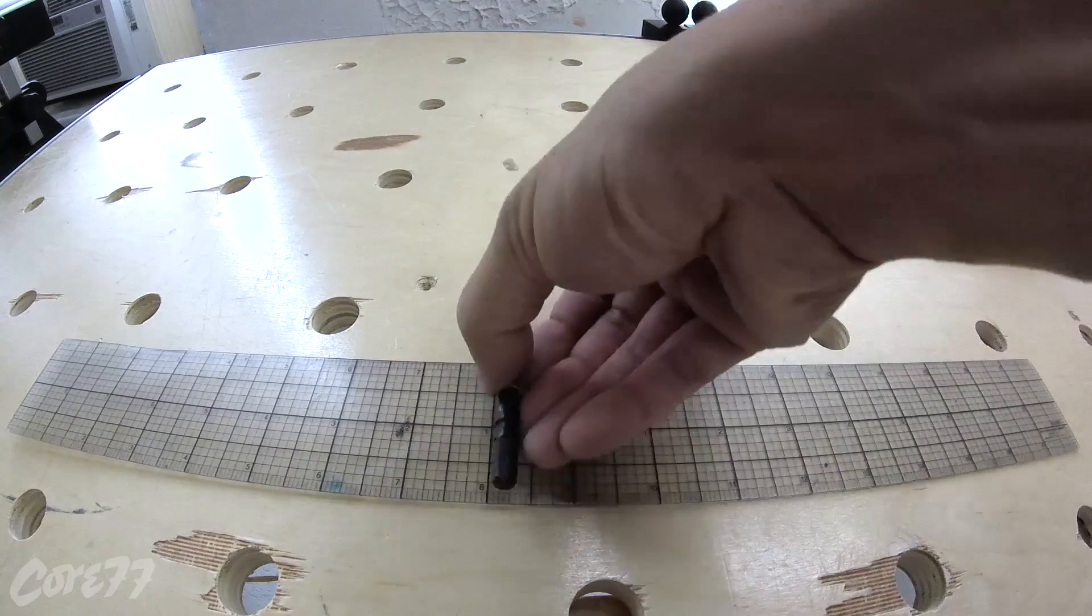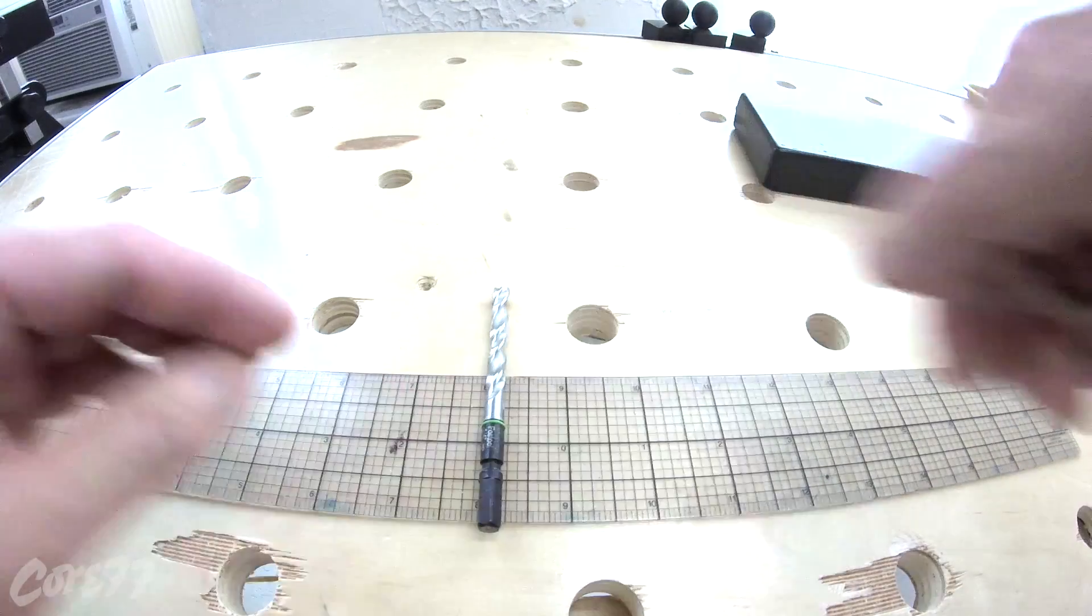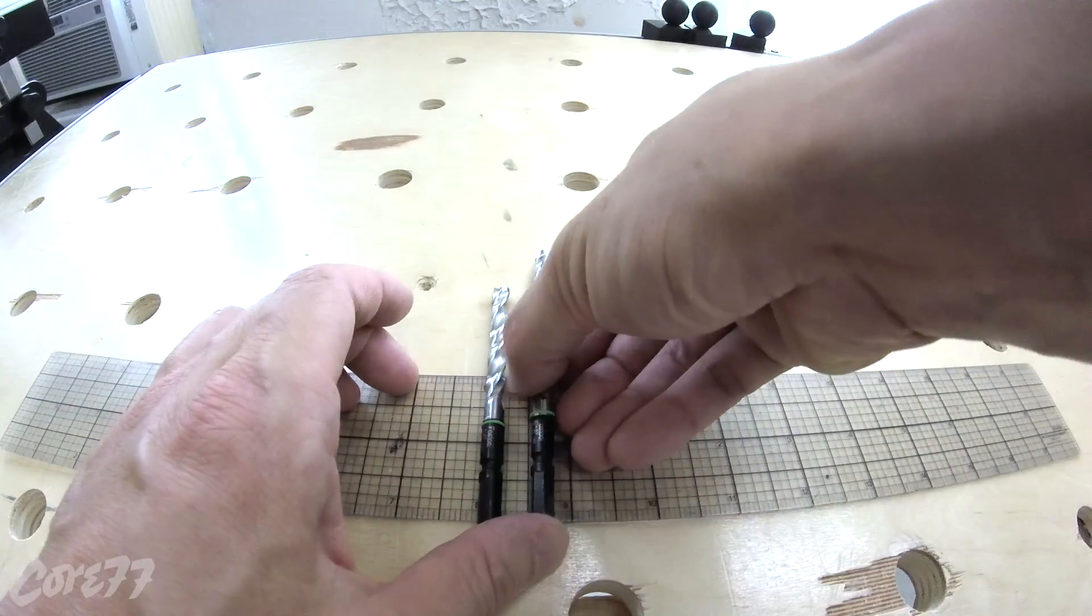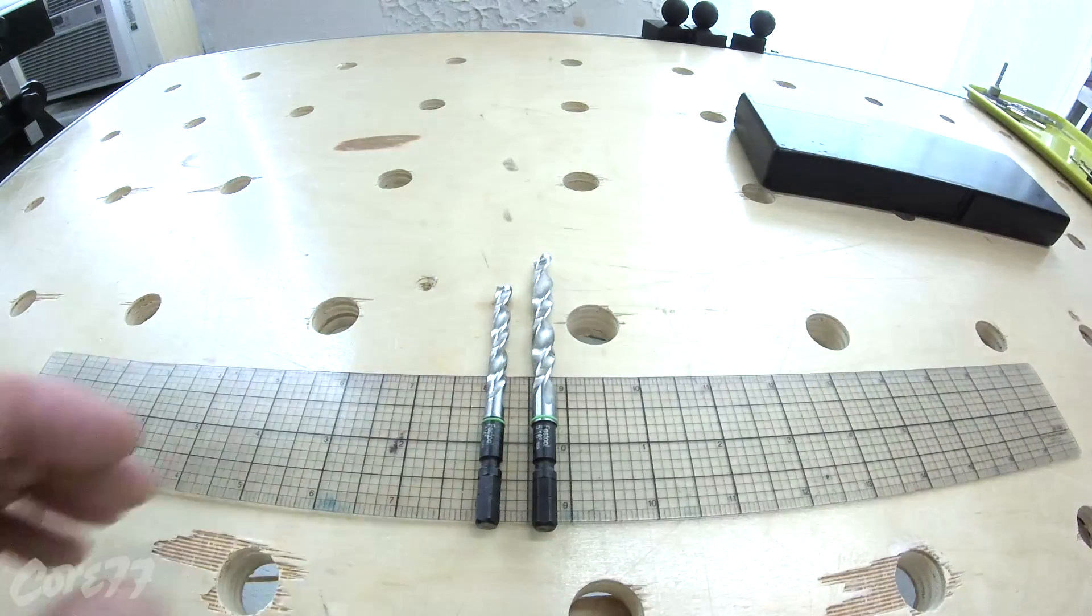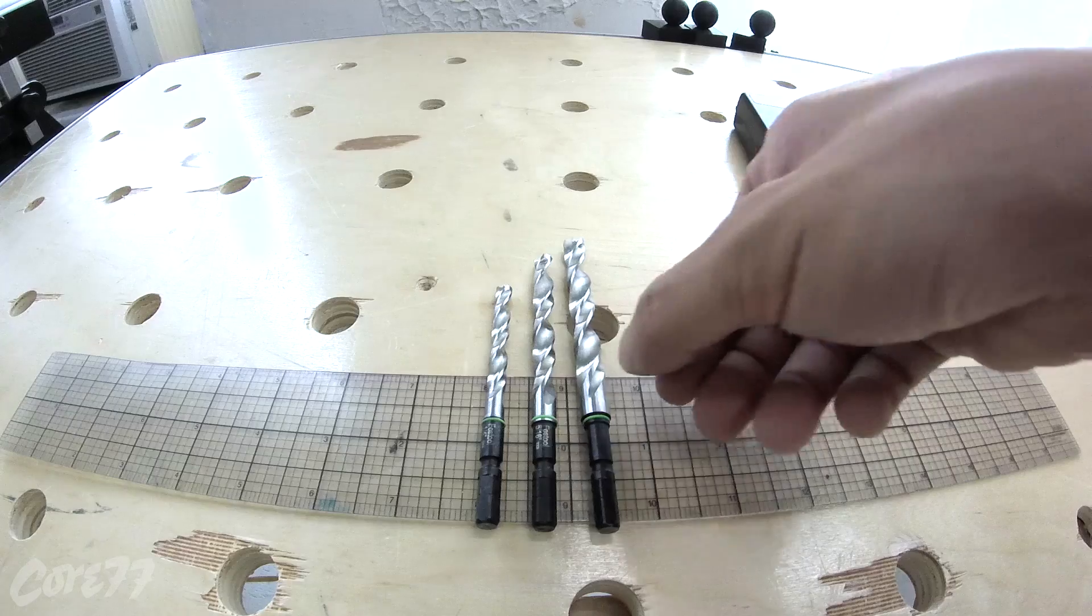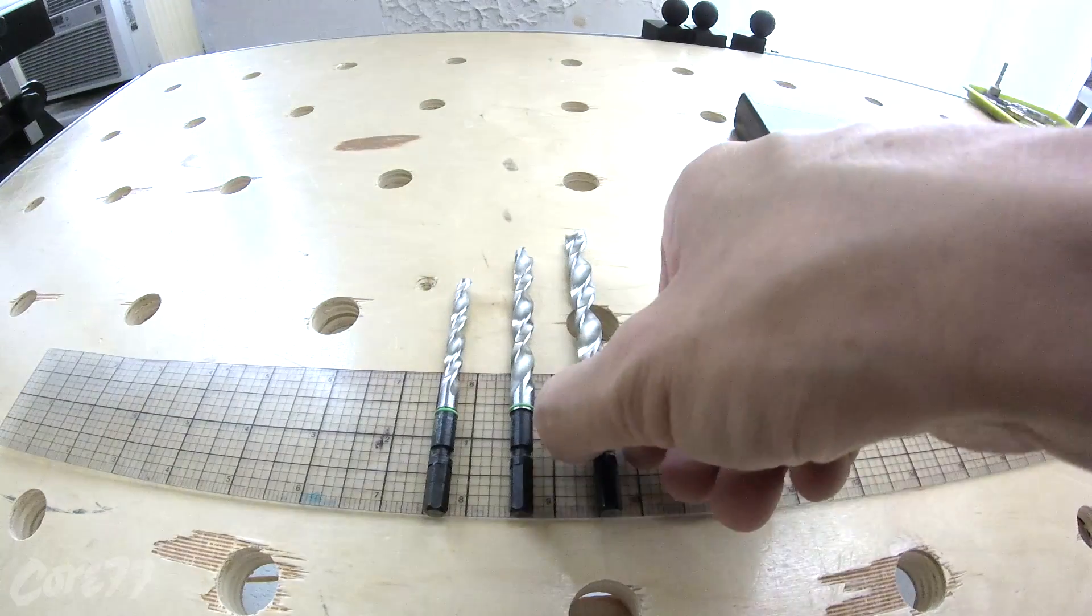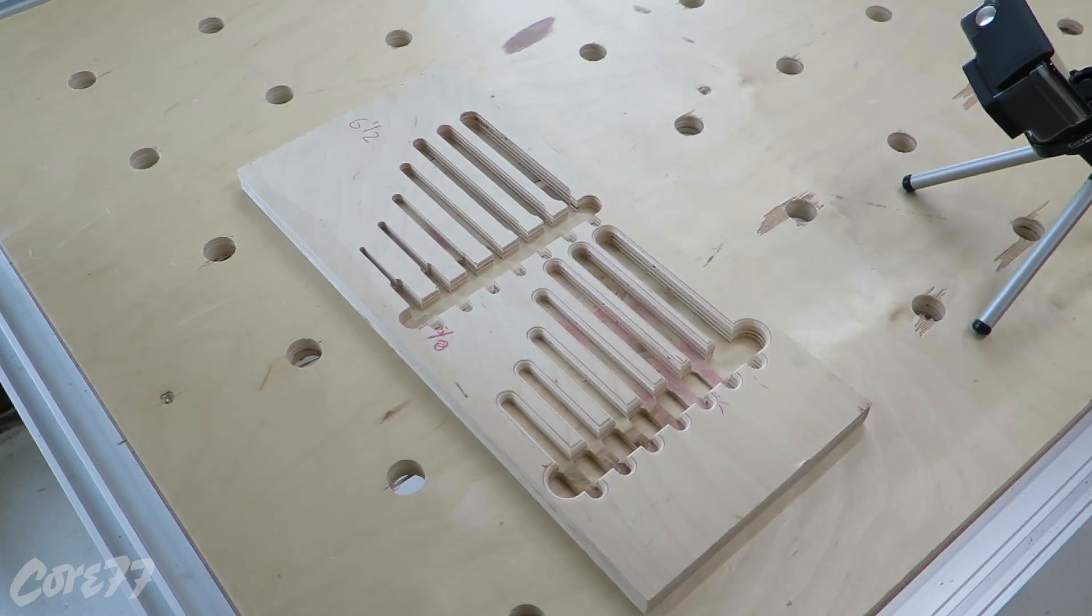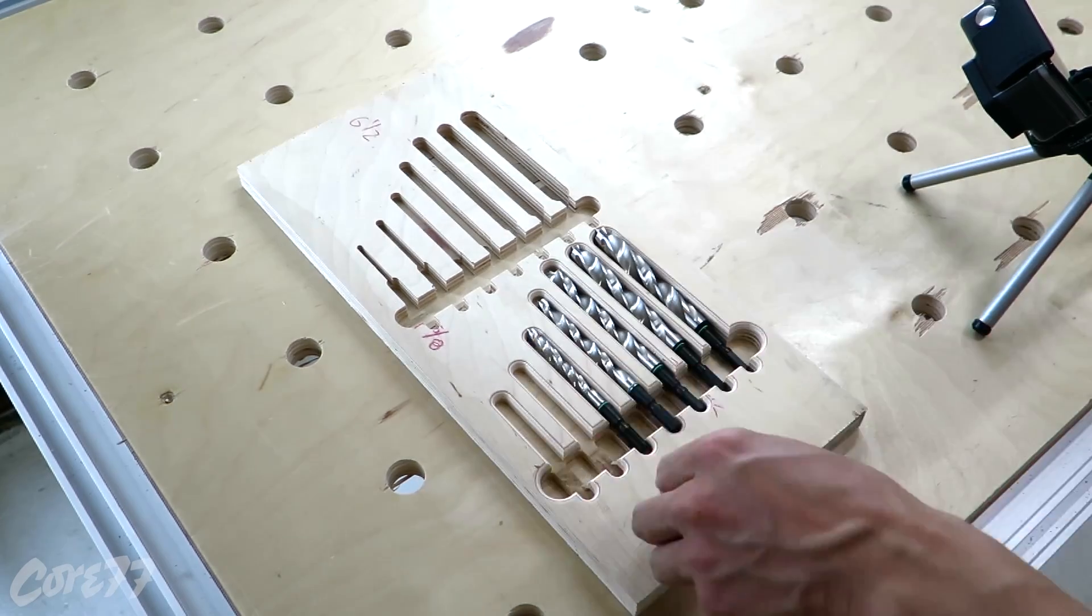Now the next question was: overall, how big is this object going to be? To determine that, I first calculated the spacing between the bits for ergonomics using this highly scientific method. Those are too close together to easily grab. That's just about right. Then I cut some test pieces to see if my math was right.